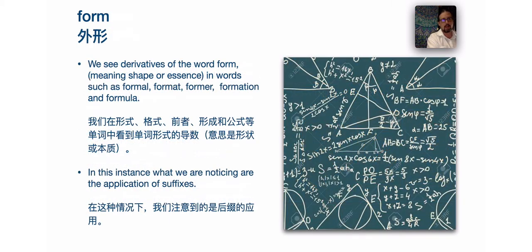We will be returning to combining forms in the not too distant future. When we see 'form' — derivatives of the word form, which means shape or essence — we see words like formal, format, former, formation, and formula. What we're noticing are the applications of suffixes: form is a root word, and former, format, formation, and formula are words with suffixes added — all belonging to the word family of form. But form is not a prefix. Similarly, the Latin word fortis meant strength, seen in words such as fortress and fortify, again applying suffixes.